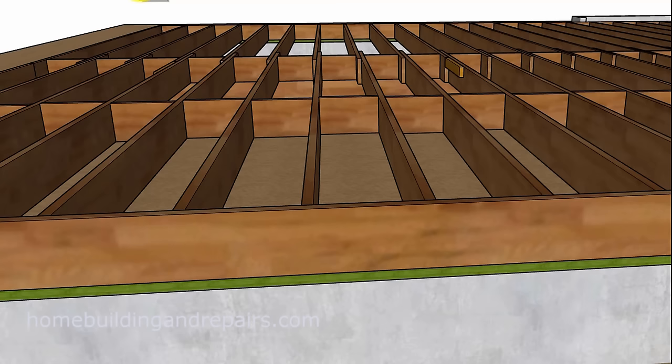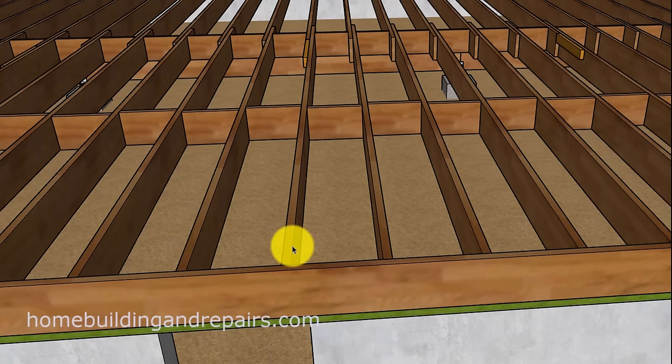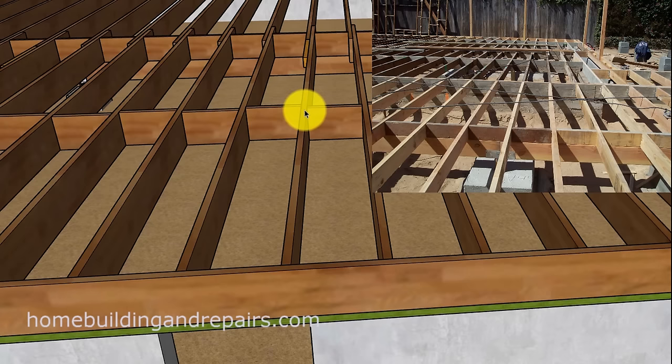So here we can see that the joists are straight. We can go a little farther down and they are still straight. This would be a good floor. You install the floor sheathing in here and you aren't going to have very many problems.